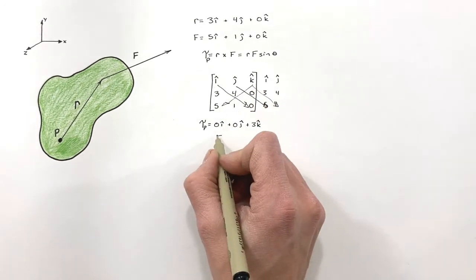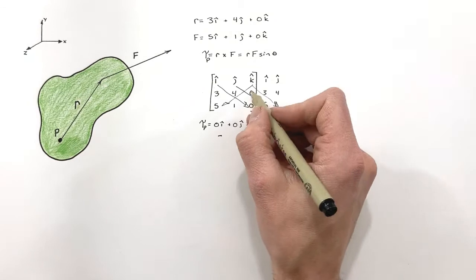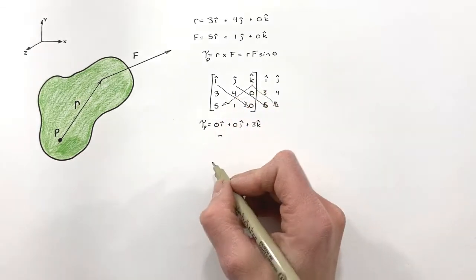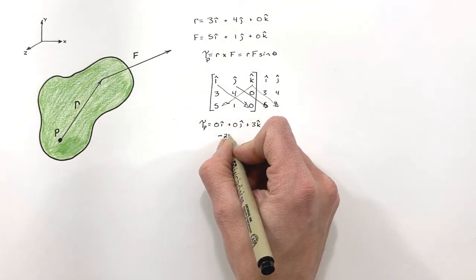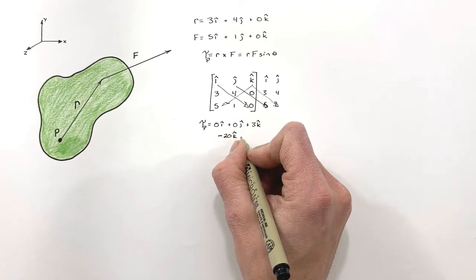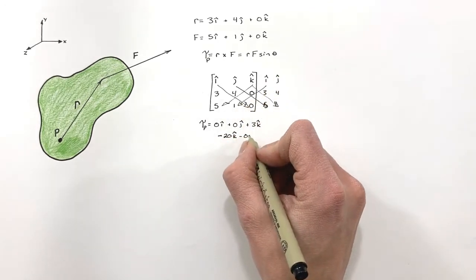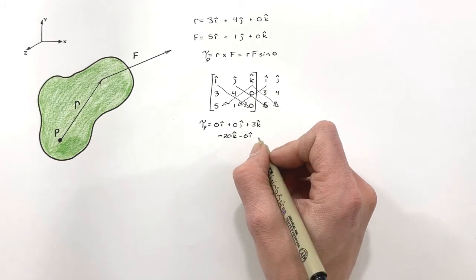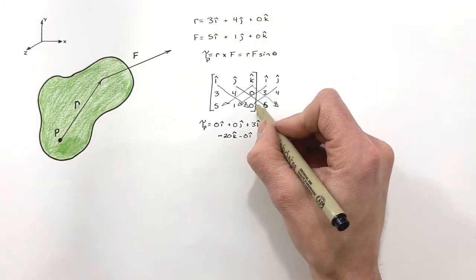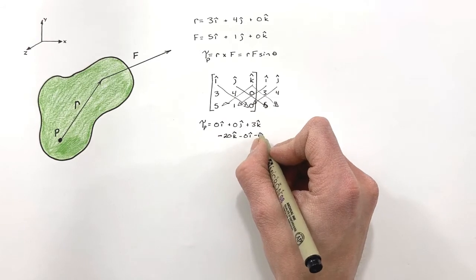Now, as we work our way down into the left, the quantities are negative. So I'm going to have negative five times four times k. So that's negative 20 k minus here, I'm going to have zero i. And here, I'm going to have minus zero j.